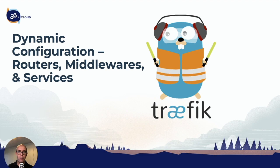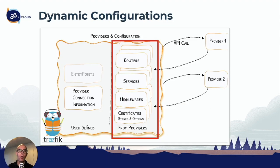Welcome back to the next section of Traefik training. In this section we're going to talk all about dynamic configuration and how we can add a label to a service or a container, enabling routers, middlewares, and services. So how does that work?